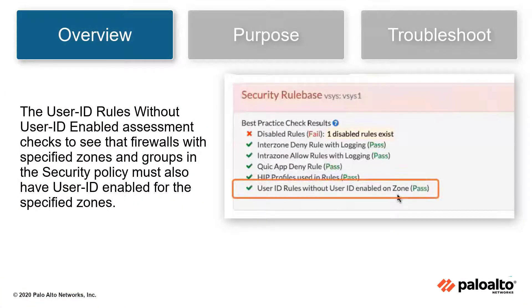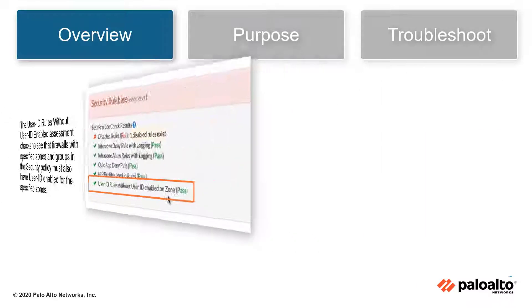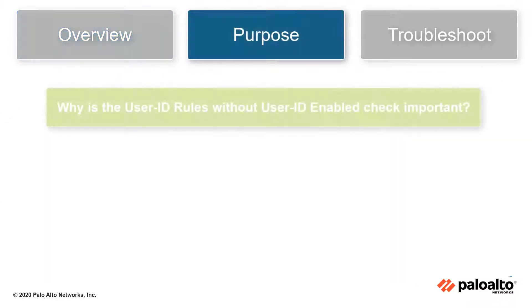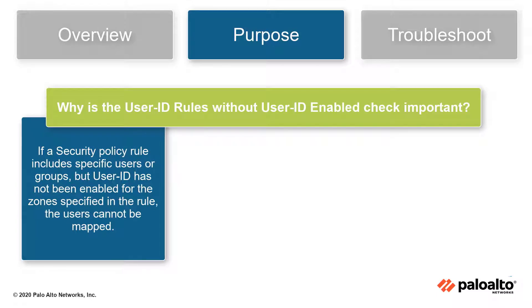The User ID rules without User ID enabled assessment checks to see that firewalls with specified zones and groups in the security policy must also have User ID enabled for the specified zones. If a security policy rule includes specific users or groups, but User ID has not been enabled for those zones specified in the rule, the users can't be mapped.